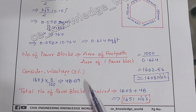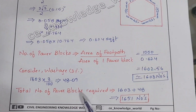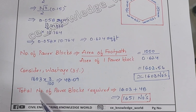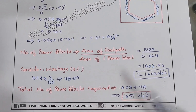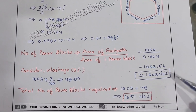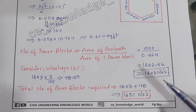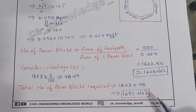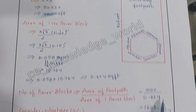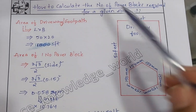For wastage purposes, we have to consider these extra blocks. The total number of paper blocks required is 1603 plus 48, which gives us 1651 numbers of paper blocks required for this 1000 square feet area.